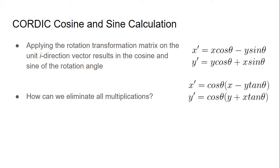So now the question is, how do we apply CORDIC to solve cosine and sine of an input angle? So you might remember from your classes that these two equations here realize the rotation transformation matrix on an input vector x and y. You might also notice that if our input vector is a unit vector in the i direction, then the result x prime, y prime will be the cosine and sine of the rotation angle.